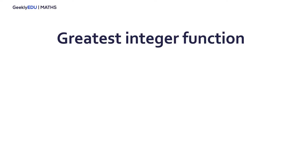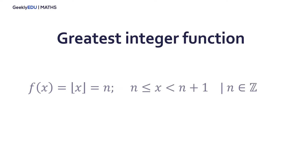The function whose value at any number x is the greatest integer less than or equal to x is called the greatest integer function, or the integer floor function. This function returns only integers based on a certain rule. The expression is read as f(x) equals the greatest integer equal to n, where x is greater than or equal to n and less than n plus 1, and n is an integer. This means that if you take any number x equal to a non-integer, this function will give you the integer just before x.